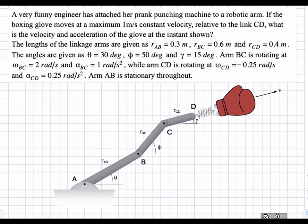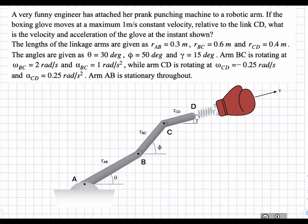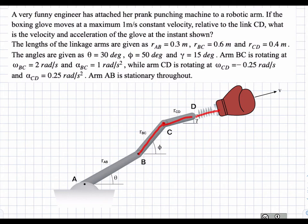Arm AB is stationary, as given in the question. So we can neglect this portion of the diagram and start from B, since we know that B will be fixed. For all of these problems, you always want to start with a location that is fixed and has no velocity or acceleration, and then work your way down the structure to get to the point of interest.